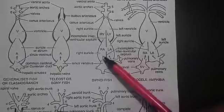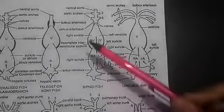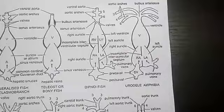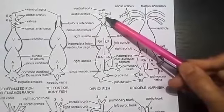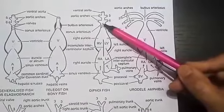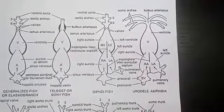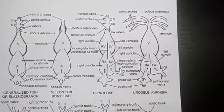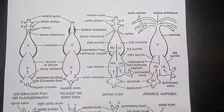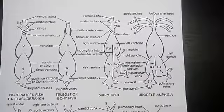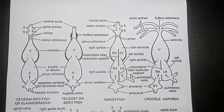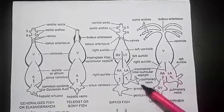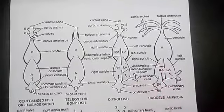Blood from right auricle of the lungfish passes to the right portion of the ventricle and then pumped into primitive lung-like gas bladder by pulmonary artery which branches off from the sixth pair of aortic arches. The blood from gas bladder returns to the left atrium by way of pulmonary veins just like amphibians.